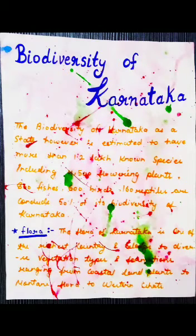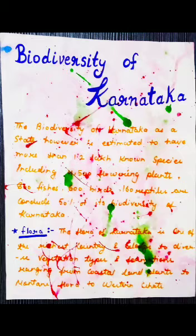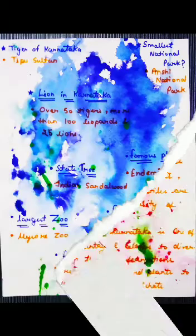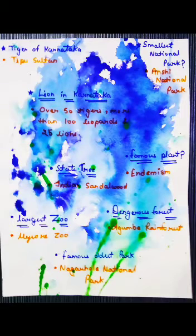Firstly, the biodiversity of Karnataka. As a state, Karnataka is estimated to have more than 1.2 lakh known species. Here I have also written about the flora, and on the next page I have written some important information about the biodiversity of Karnataka.